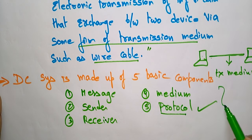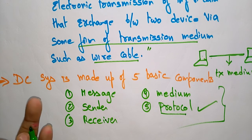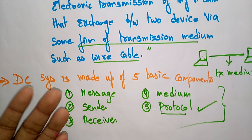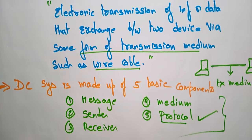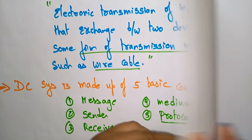So these are the five basic components required for data communication: message, sender, receiver, medium, and protocol. Let me show you in the form of a diagram the components of data communication.